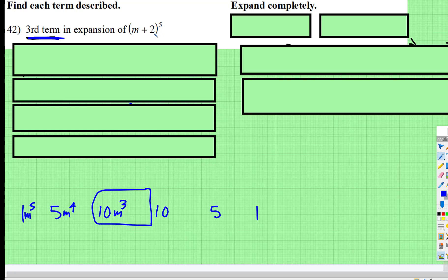So we just have to now find the power of 2. So this is 2 to the fifth, 2 to the fourth, 2 to the third, 2 squared. 2 squared is 4, 4 times 10. So this third term is 40m cubed.